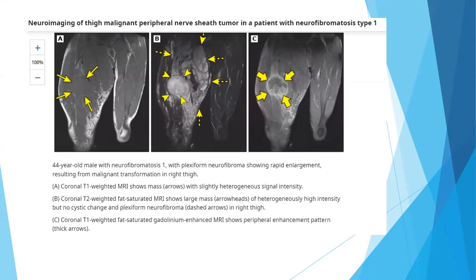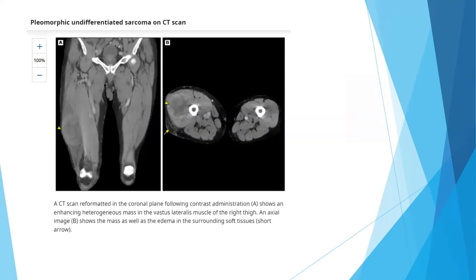These images are very important and may be the only clue in a question. Here you can see a 44-year-old male with neurofibromatosis type 1 and plexiform neurofibroma showing rapid enlargement from malignant transformation in the right thigh. Image A is the T1-weighted MRI showing slightly heterogeneous signal intensity. Image B is the fat-saturated MRI showing a large mass. Image C is the gadolinium-enhanced MRI showing how the tumor enhances.